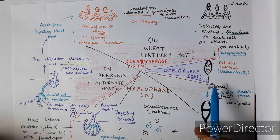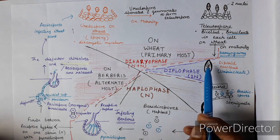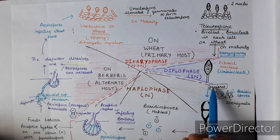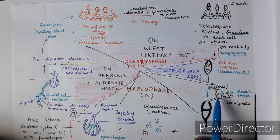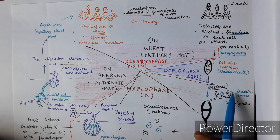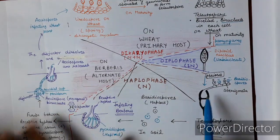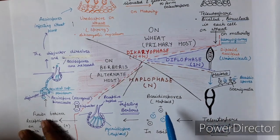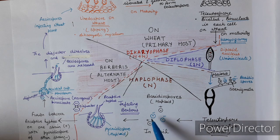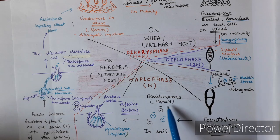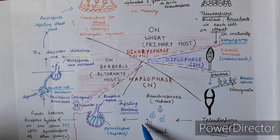When the diploid nucleus undergoes meiosis, four nuclei are formed — two of positive strain and two of negative strain. These are formed on the tip of the sterigmata. These small circular structures are called basidiospores. Basidiospores are haploid in nature and may be of positive or negative strain. They are present in the soil.